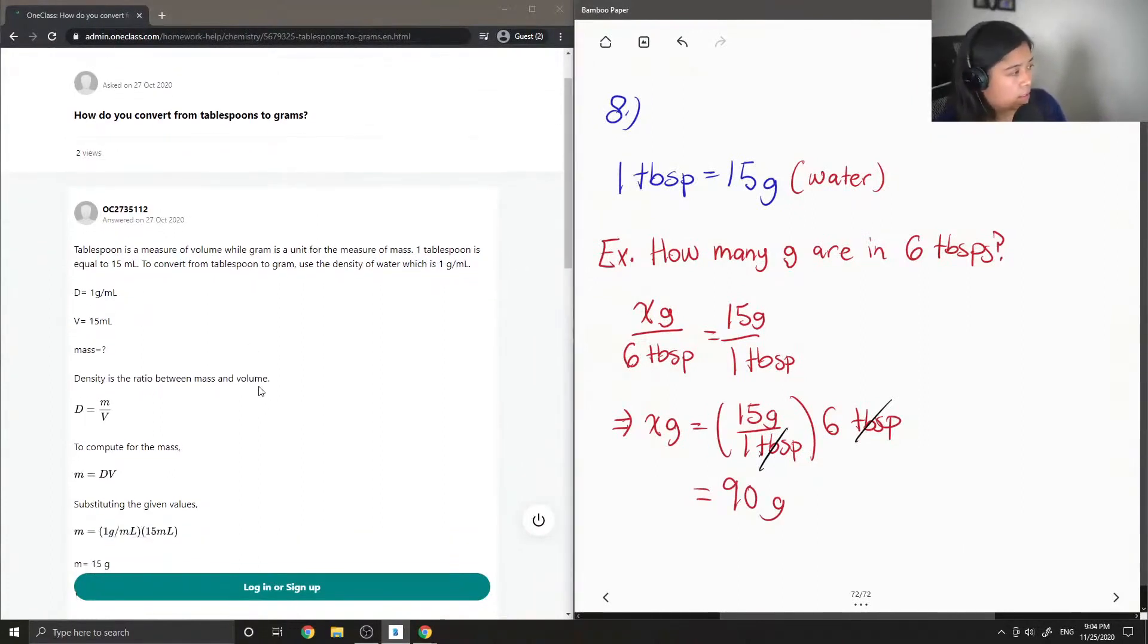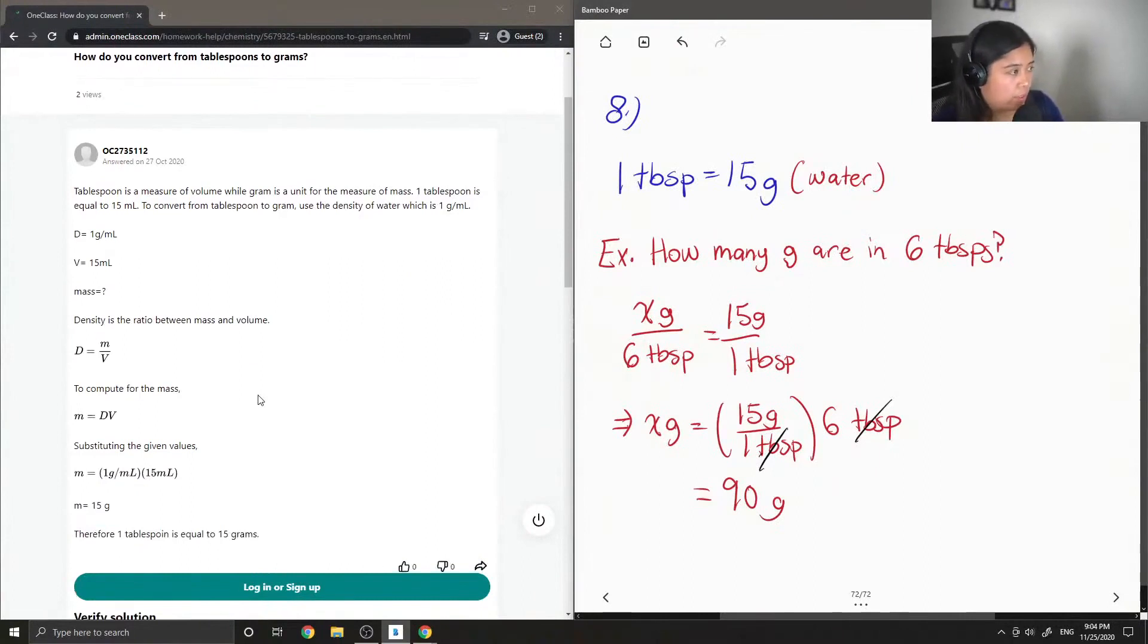So the junior tutor said, tablespoon is a measure of volume while gram is a unit for the measure of mass. Yep, so 1 tablespoon equals 15 mils. Just convert from 1 tablespoon to gram.